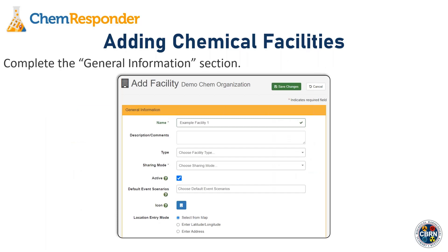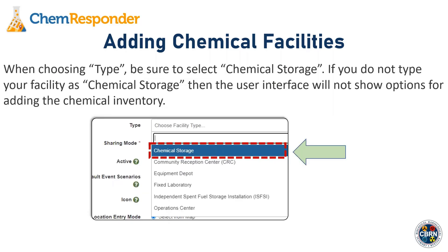On the Add Facility page, at the top you'll be presented with a General Information section. This will ask for fields like the name of the facility, any description you'd want to provide, type, and sharing mode. I want to particularly note the type field — be sure that you select the Chemical Storage type. If you do not type your facility as Chemical Storage, the interface will not give you options for adding the chemical inventory later on.